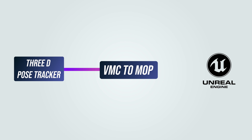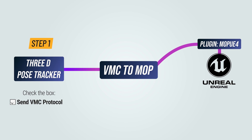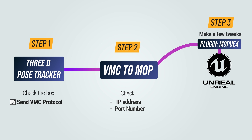We are close to finishing the puzzle. Our next move is to install a simple plugin in Unreal Engine, and we will be able to animate a MetaHuman in real time. The workflow will be as follows: Step 1 — get 3D Post Tracker up and running and adjust the settings as needed. Step 2 — install VMC2MOP and double-check that the IP address and port number are correct. Step 3 — install the MOP plugin, make a few tweaks in Unreal Engine, and we are good to go.